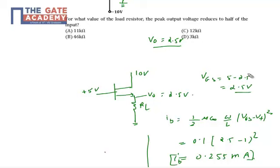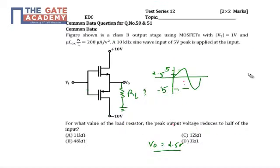The question asks to find out the value of RL. So RL will be, using Ohm's law V by I, 2.5 divided by 0.255 milliamperes, which will be equal to 11.1 kilo-ohms. So my resistance is 11.1 kilo-ohms, which is approximately equal to 11 kΩ. Part A is my answer.